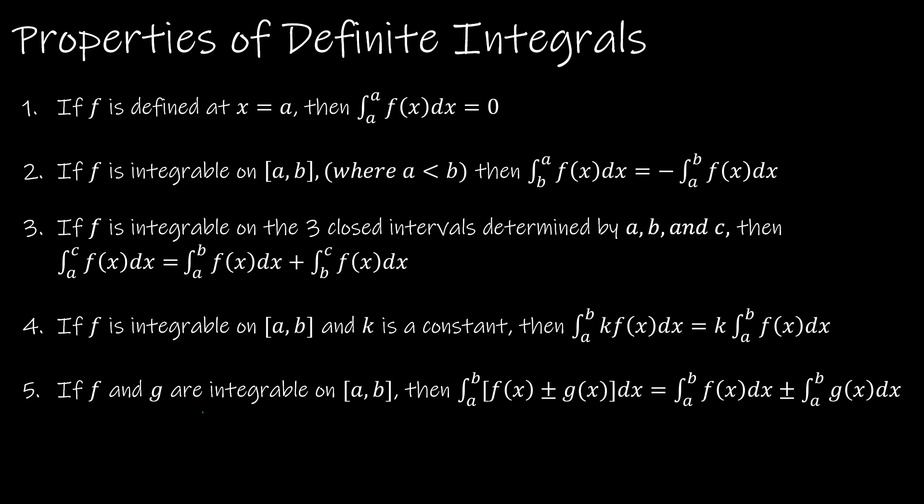Now we have five properties to go over. Property 1: if f is defined at x equals a, then the integral from a to a of f(x) dx is 0 — finding the area of nothing gives 0. Property 2: if f is integrable on [a, b] where a is less than b, and the limits are in the wrong order, you fix it by negating the integral and switching the limits back to least-to-greatest order.